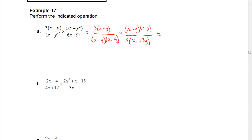The denominator here we can factor out a 3, and that's going to leave us with 2x plus 3y. Once it's all factored and it's multiplication — remember that just means all the top goes together and all the bottom goes together — we can start canceling. We have a 3 and a 3, those cancel. We have (x minus y) and (x minus y), and (x minus y) and (x minus y), and we're left with the answer: (x plus y) over (2x plus 3y).